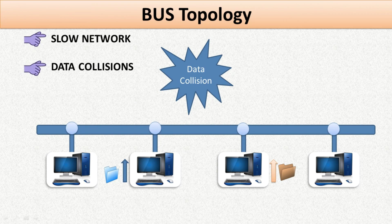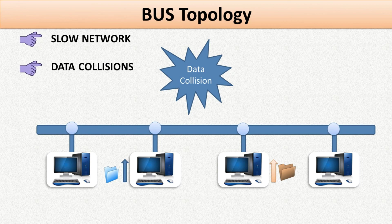This is one of the reasons why bus topology is rarely used in modern computer networks. An example of bus topology is Ethernet LAN.